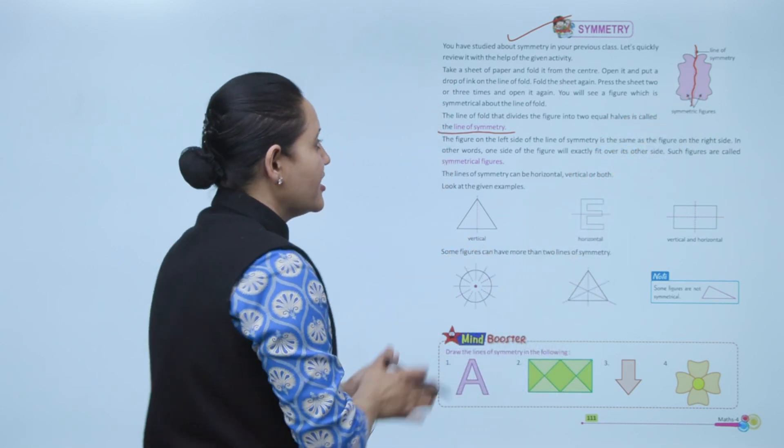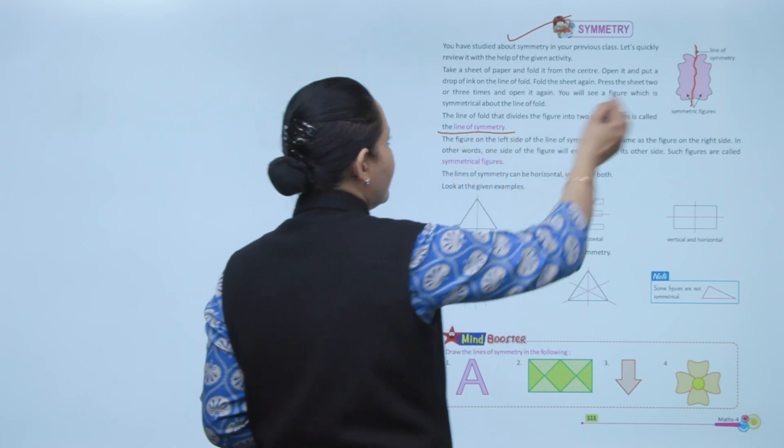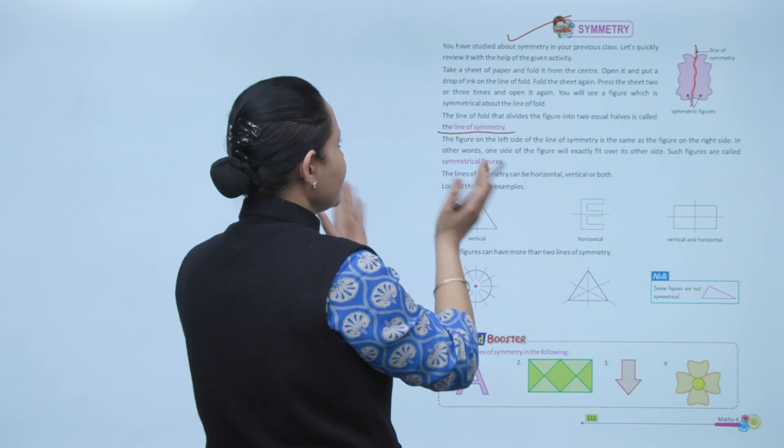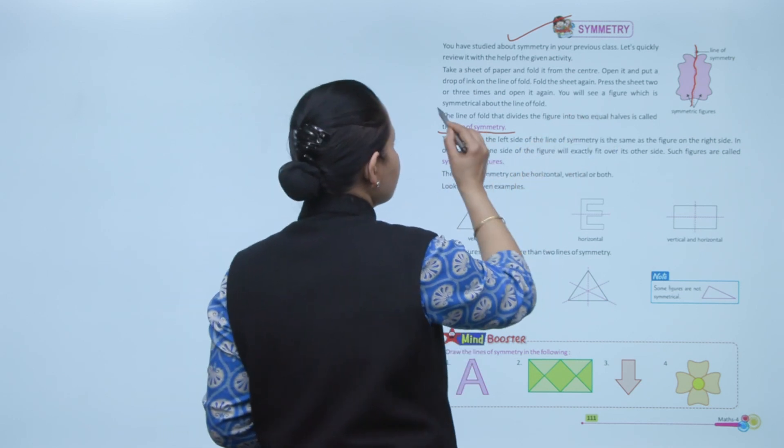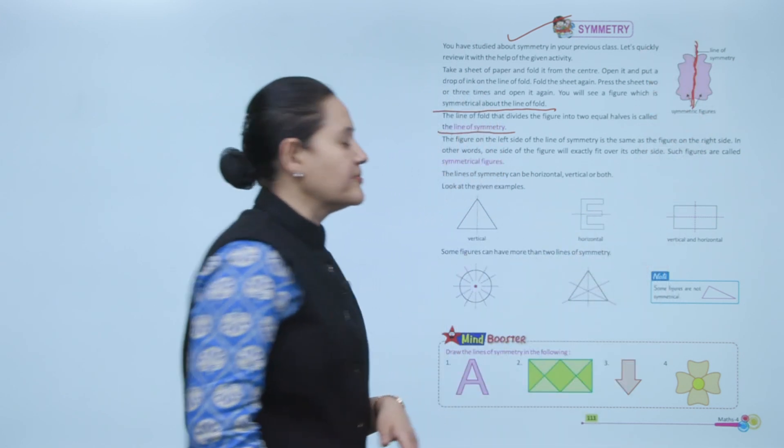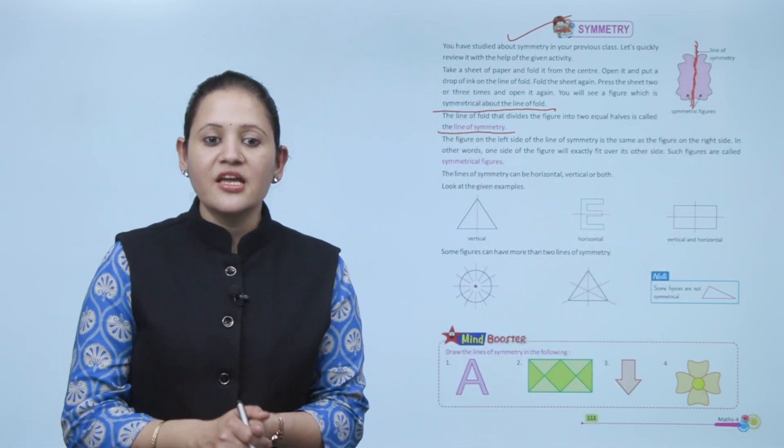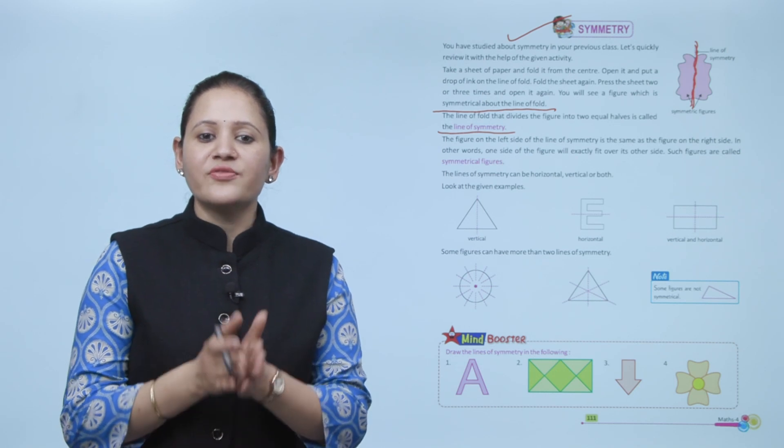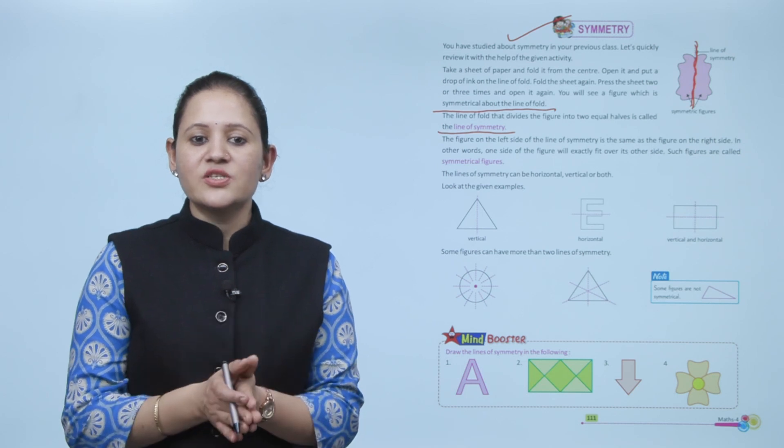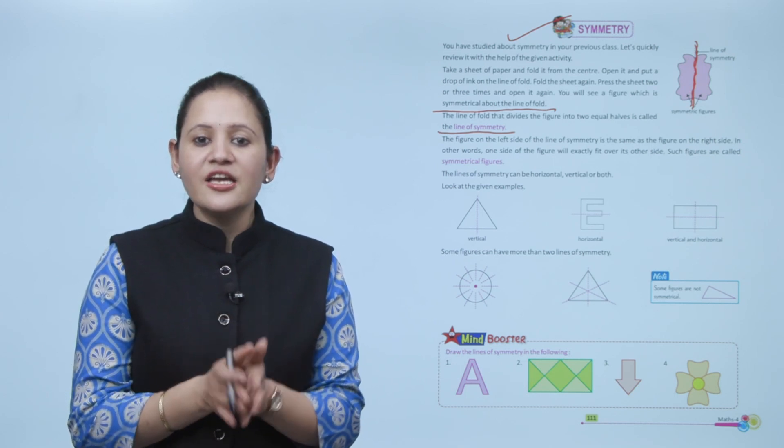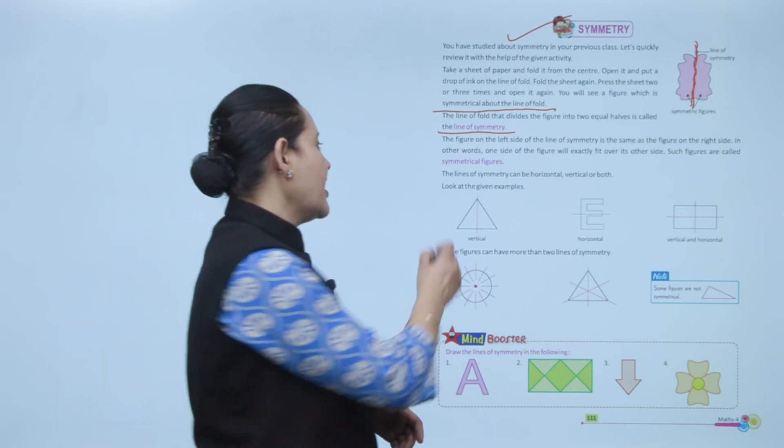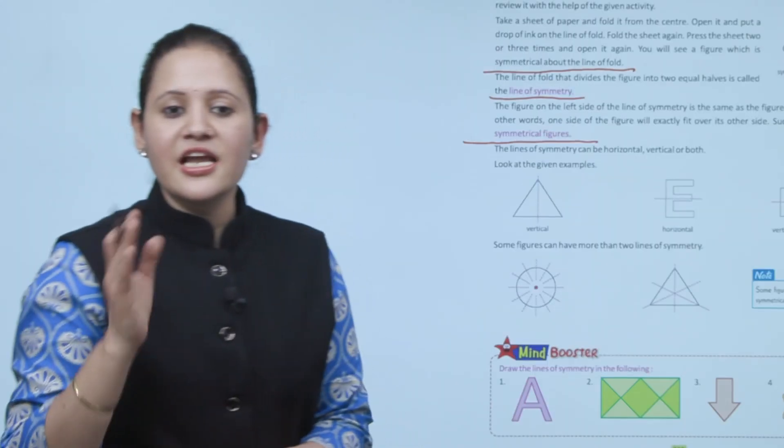Fold it and press it like this. The figure we'll get will be symmetrical because when we press it, you see a figure which is symmetrical about the line of fold. This line is called the line of symmetry. The figure on the left-hand side of the line of symmetry is the same as the figure on the right-hand side. In other words, one side of the figure will exactly fit over its other side. Such figures are called symmetrical figures.